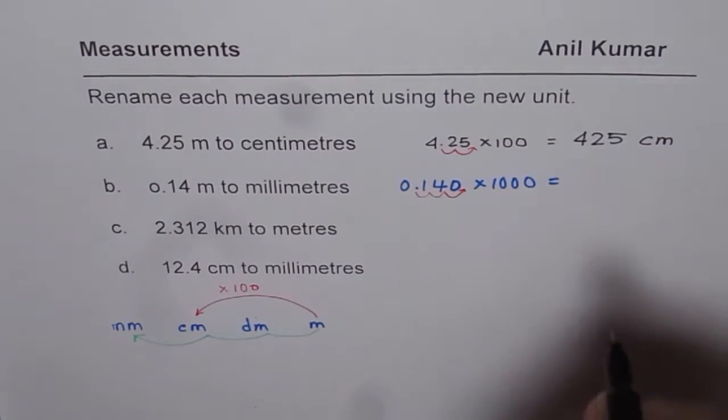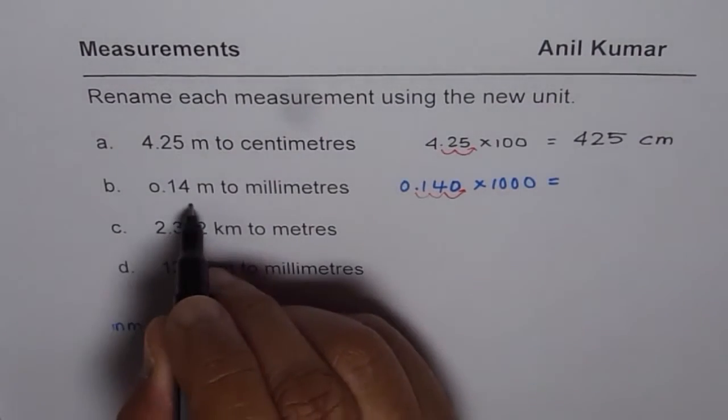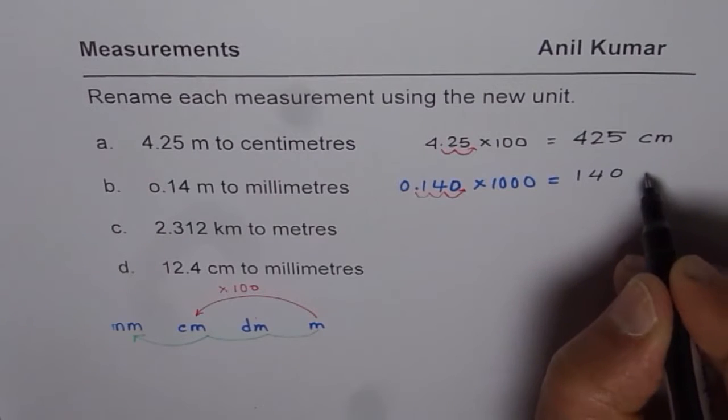1 more. So we get 140. Do you get the idea? So 0.14 meters will be 140 millimeters.